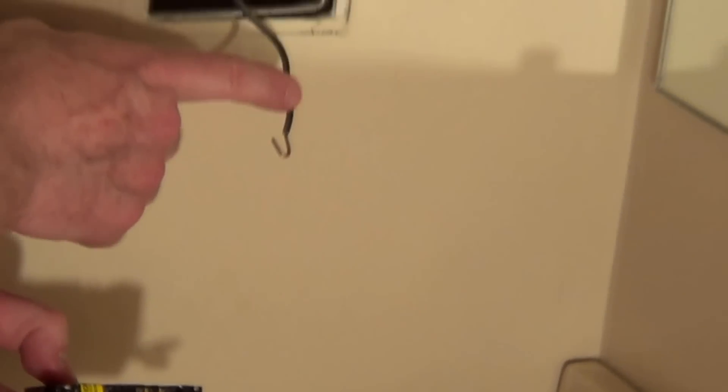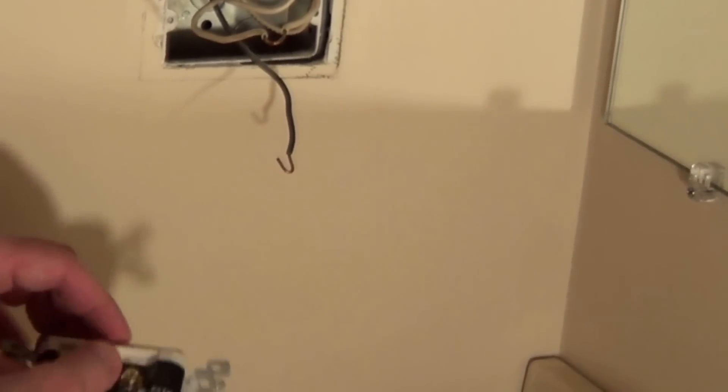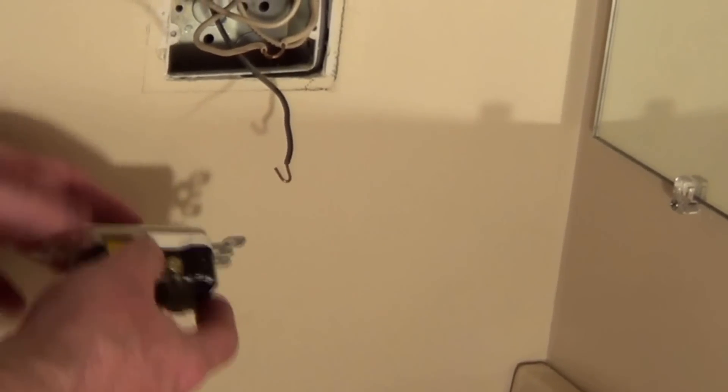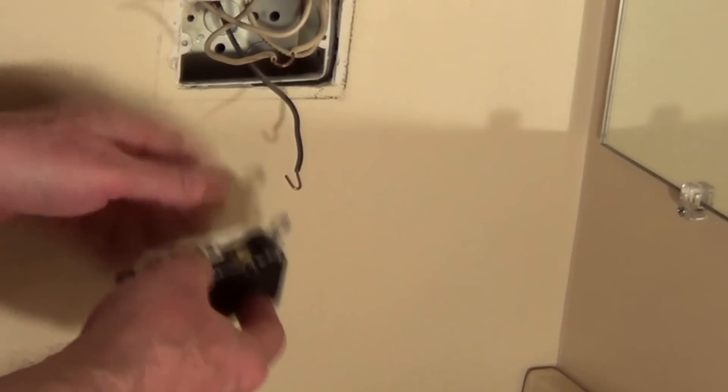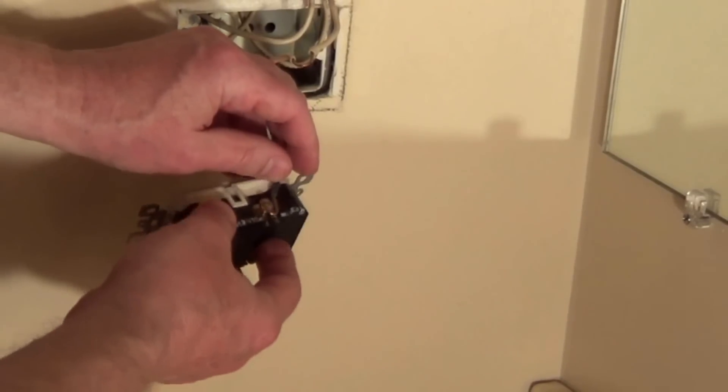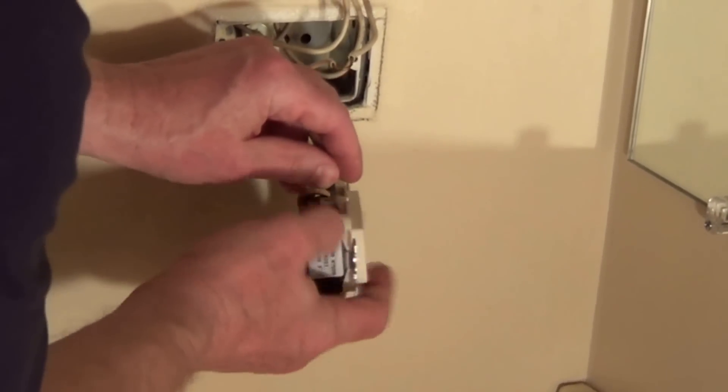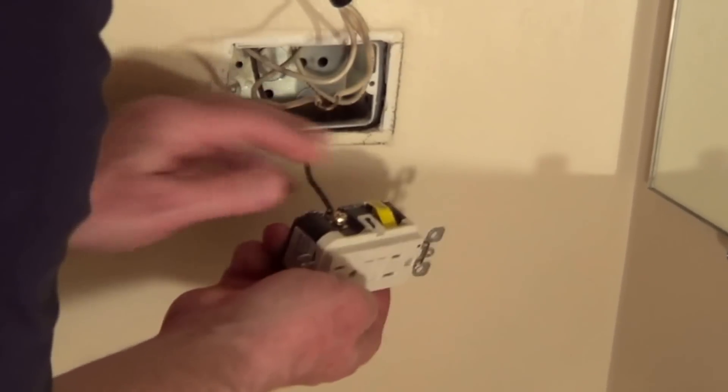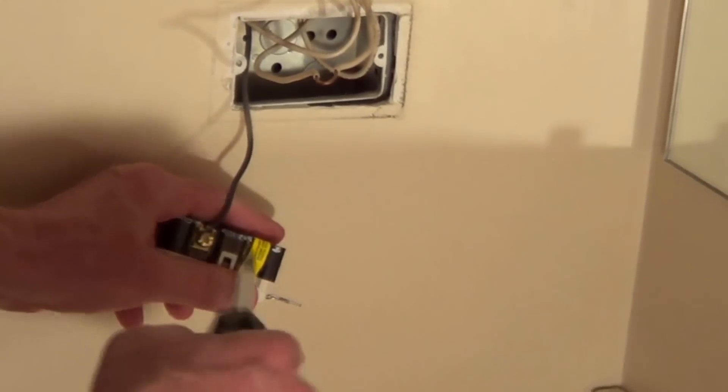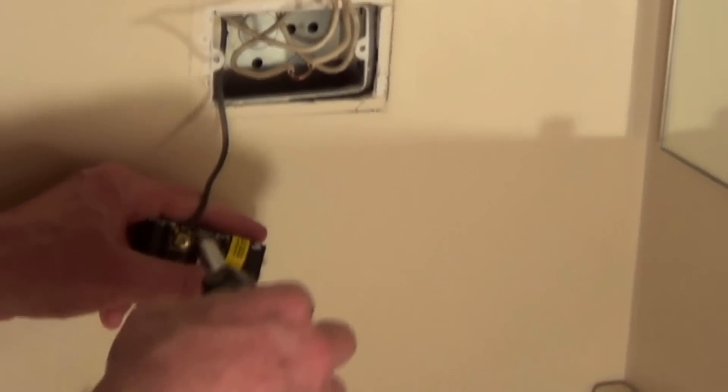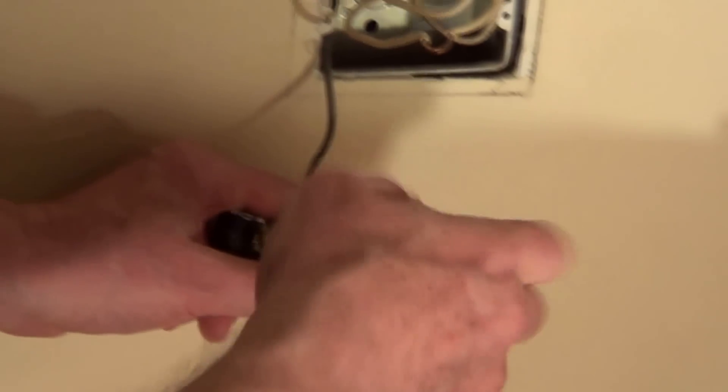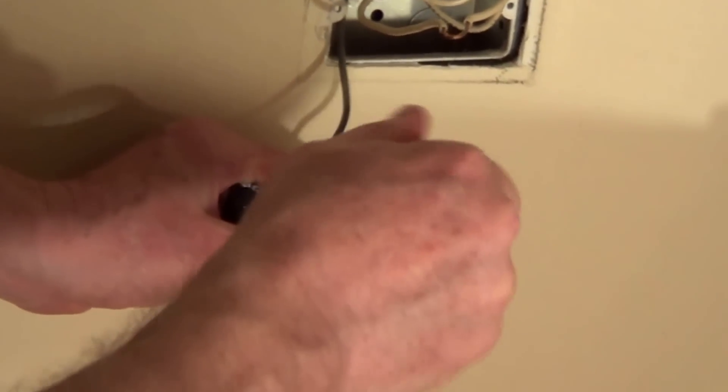In the USA here, we use black for hot, white for neutral. This has a nice loop on it and we're going to wrap this clockwise around the screw so it tightens down on the screw. We wouldn't want to wrap that hook counterclockwise because it would actually push it off. So we connect the hot to the brass screw.